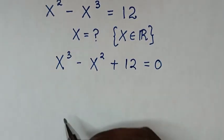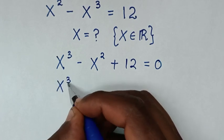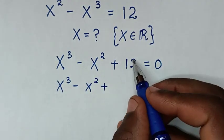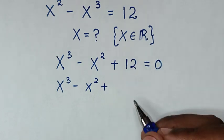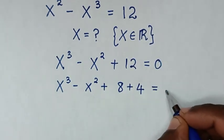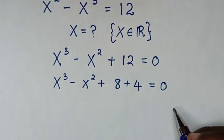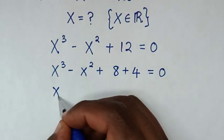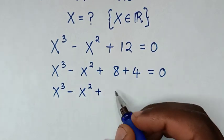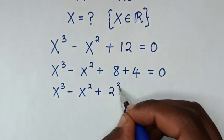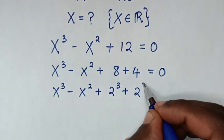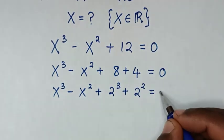Then in the next step, it will be x cubed minus x squared plus 12, which is the same as 8 plus 4, equal to 0. So we rewrite it as x cubed minus x squared plus 8, where 8 is 2 cubed, plus 4, where 4 is 2 squared, equal to 0.